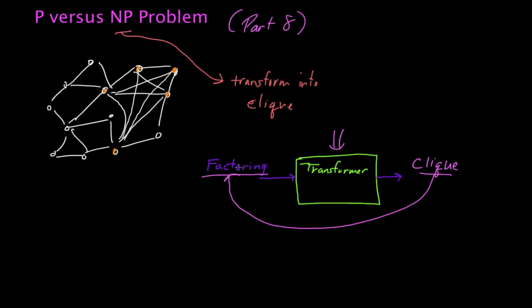Now, what's also interesting about this transformer is that in this particular case for clique and factoring, it's known to go in one direction. In other words, we know how to transform factoring instances into clique instances, but we do not know how to go in the opposite direction. We do not know how to transform clique instances into factoring instances so that any efficient solution to factoring would in turn lead to an efficient solution to clique.